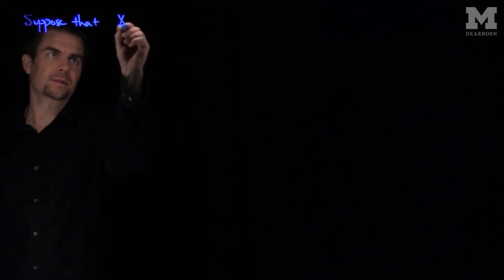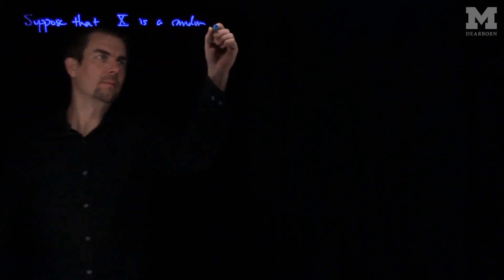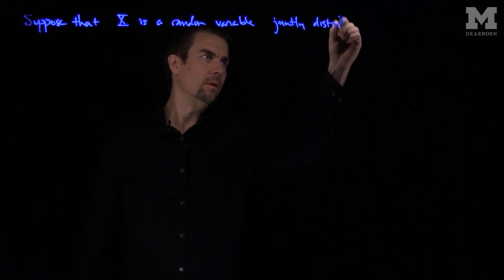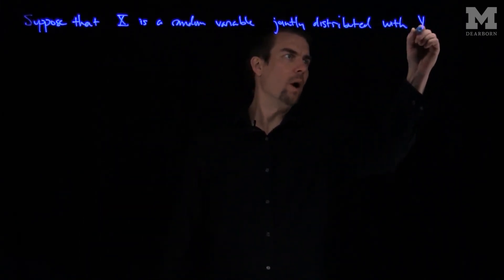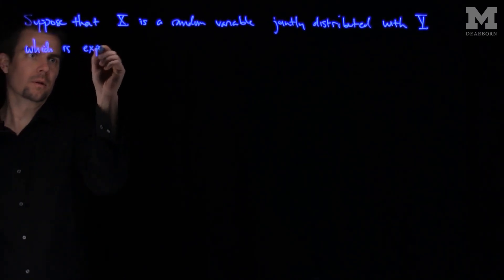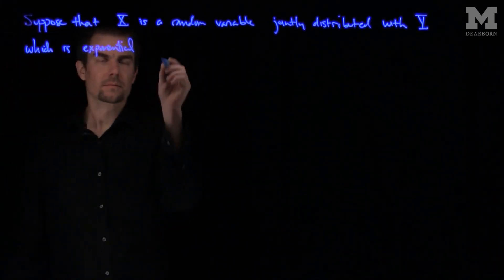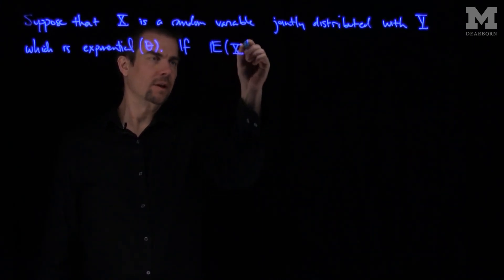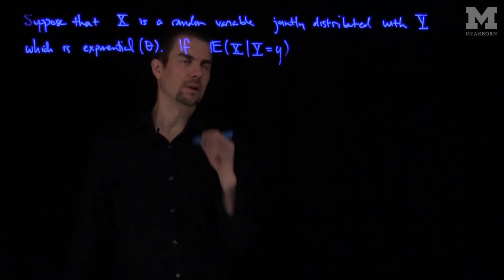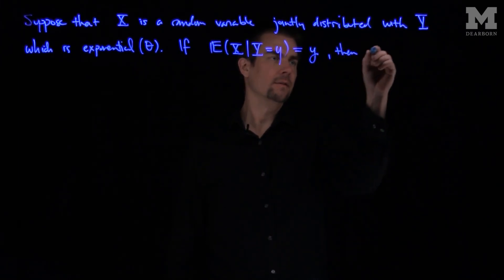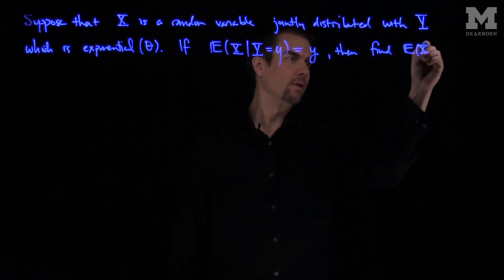Let's suppose that x is a random variable jointly distributed with y, which is an exponential random variable with parameter theta. If the expected value of x, given that y is equal to little y, is equal to y, then find the expected value of the random variable x.